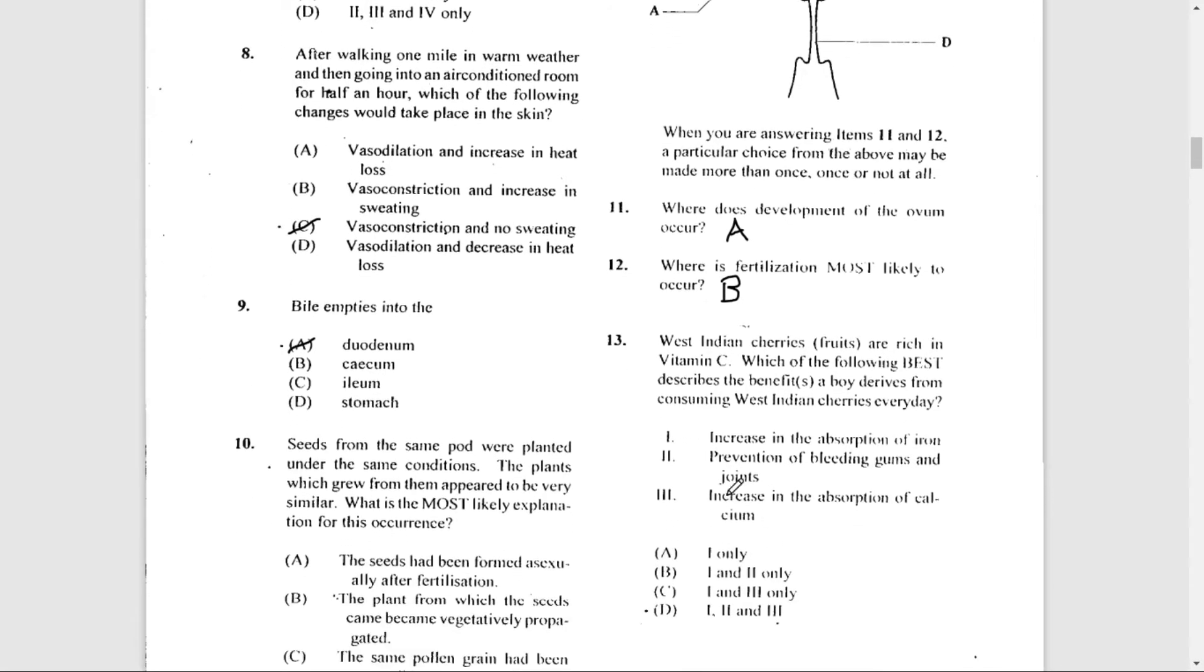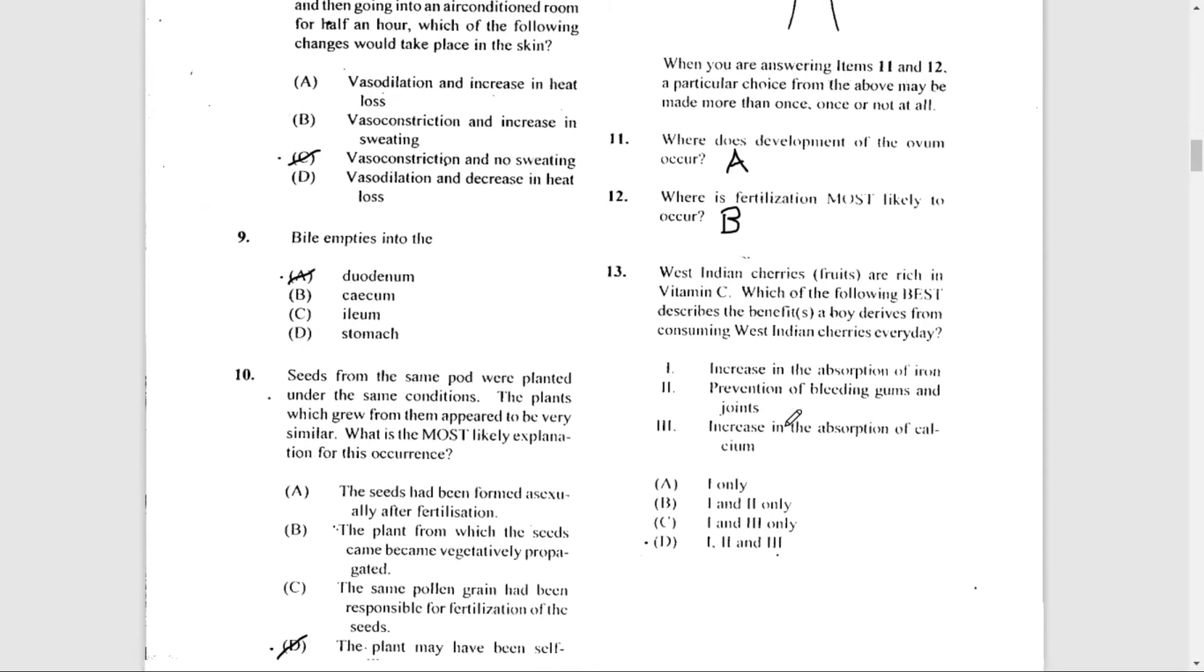Number 13: West Indian cherries or fruits are rich in vitamin C. Which of the following best describes the benefit or benefits a boy derives from consuming West Indian cherries every day? One: increasing the absorption of iron—that is true. Two: prevention of bleeding gums and joints—that is also true. And three: increasing the absorption of calcium. All three of them are true, so the answer is D.